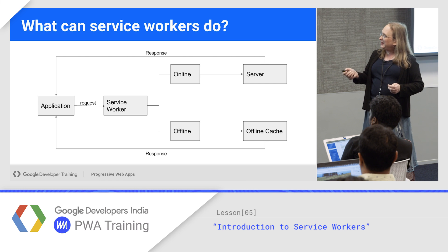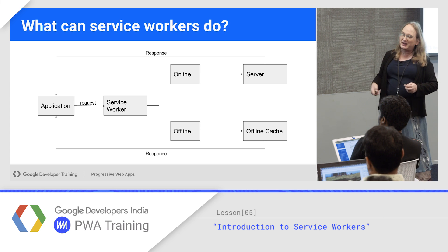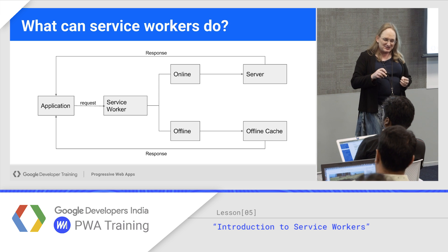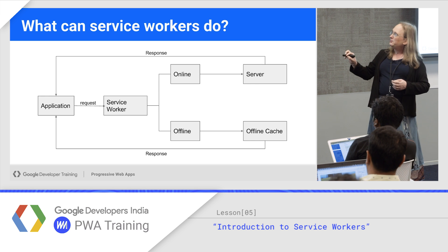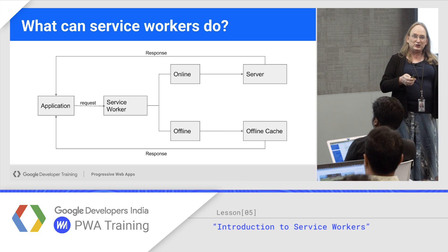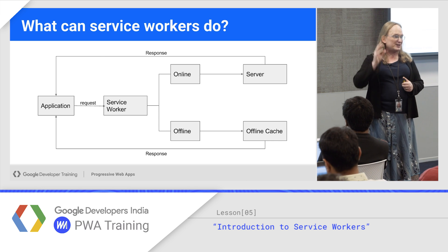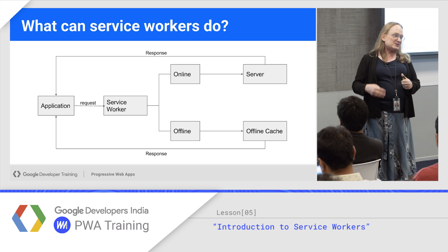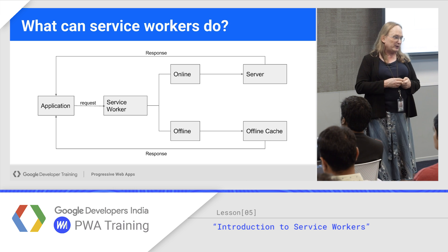A service worker might make a decision based on whether you're online or offline, to go either to the server or the cache. There's a navigator.online flag you can look at to determine this. The nice thing is it's transparent to the rest of your app — the rest of your app just makes requests normally, and the service worker takes care of the redirection.